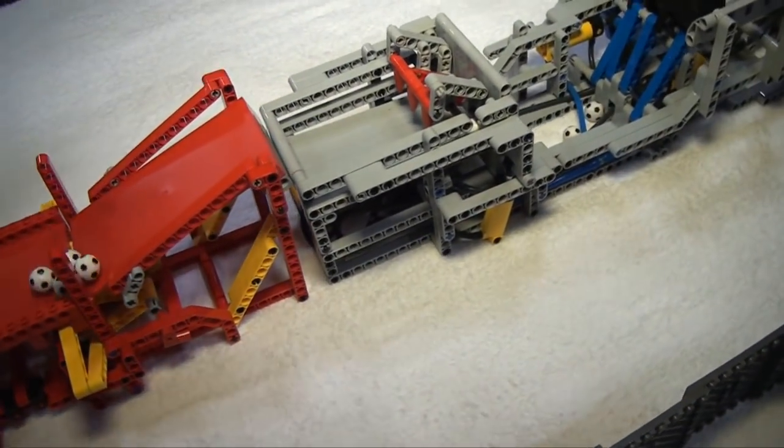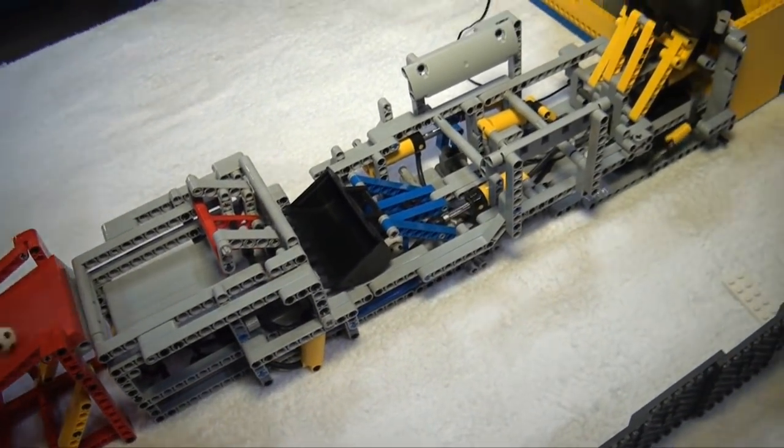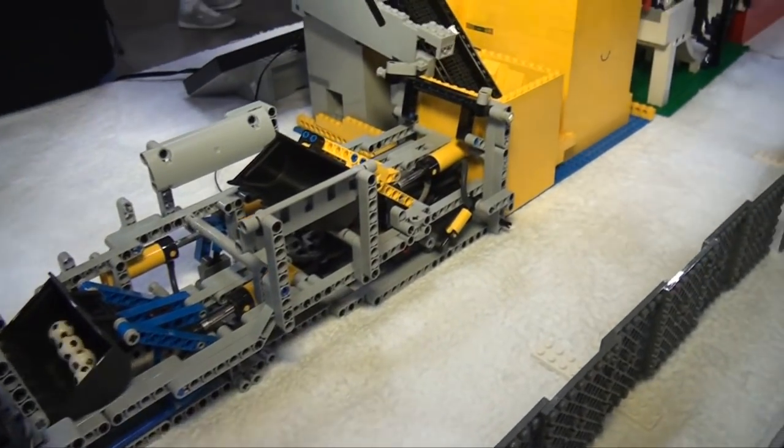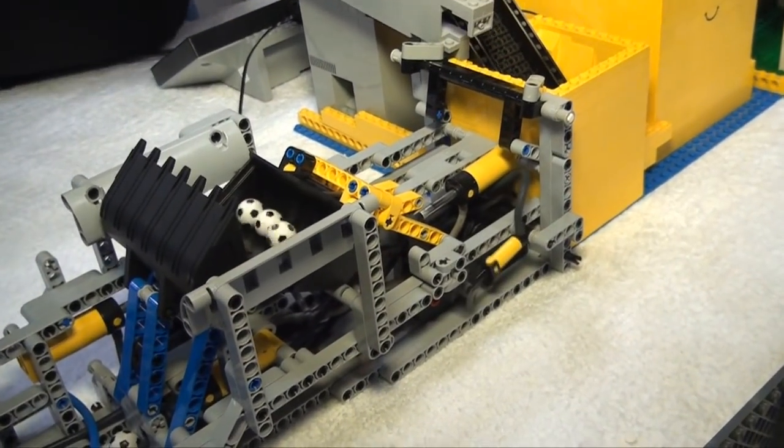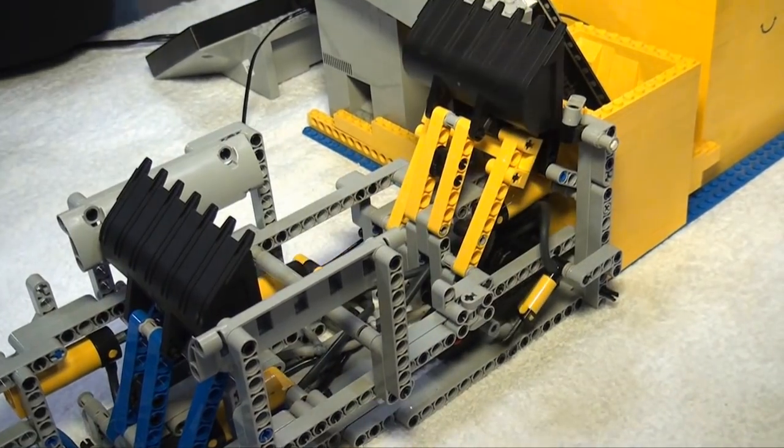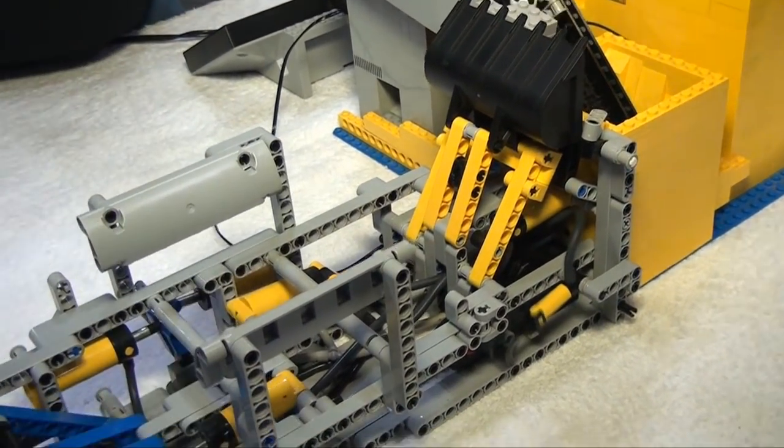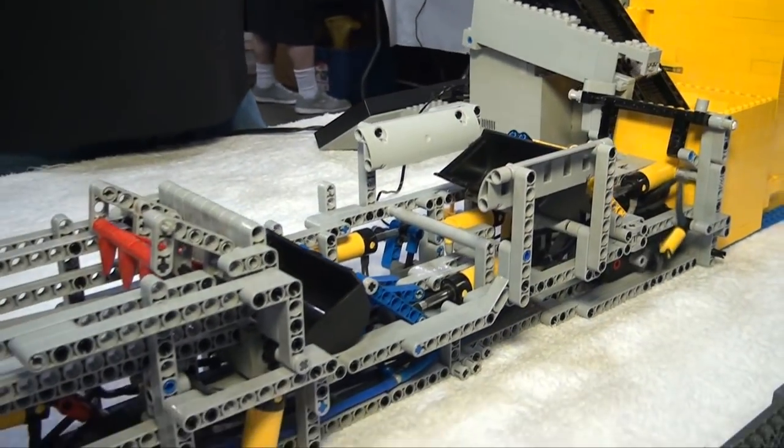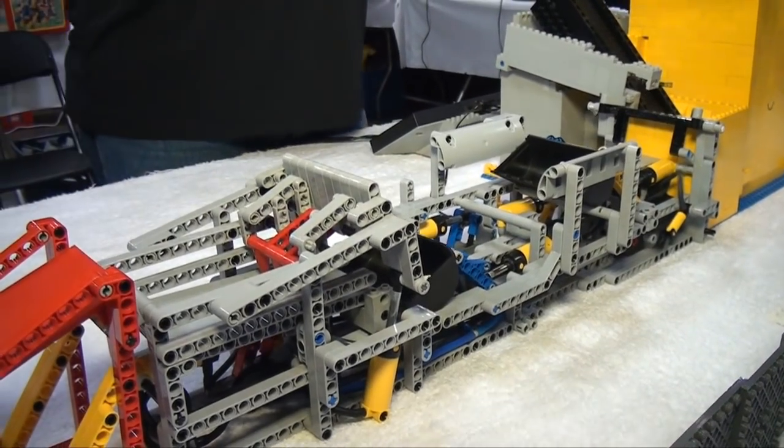The next module is a pneumatic module. You can see this little motor down there is running at 500 miles an hour. All it's doing is compressing air. The rest of it is all based on that compressed air with switches and pneumatic cylinders running it.